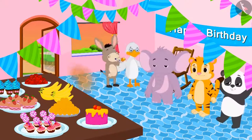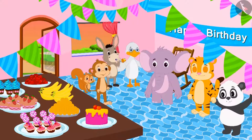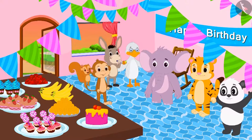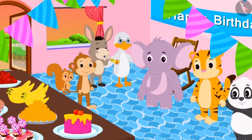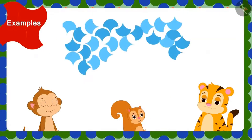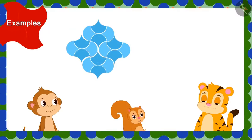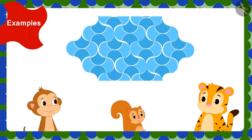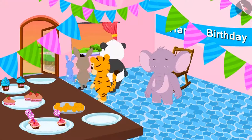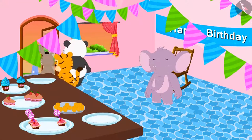Sher Khan, Chanda and Babban have come to Appu's birthday party. On seeing the design made with tiles on Appu's floor, they also thought of using such tiles to make beautiful designs in their house. The party got over and everyone went back home.